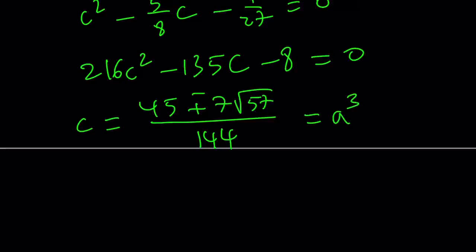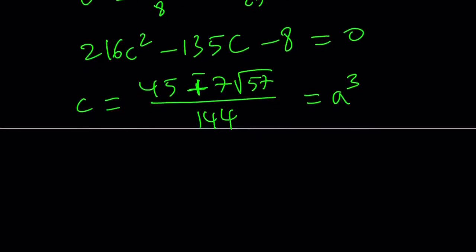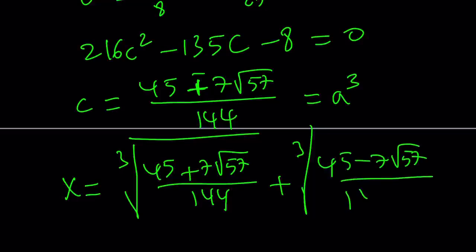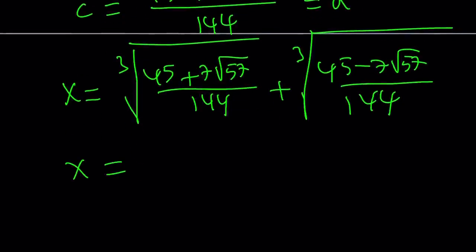Take one of the solutions. Doesn't matter which one because a plus b is commutative. From here, a becomes the cube root. So a becomes one of the cube roots, and b becomes the other cube root. So to keep a long story short, x becomes the cube root of 45 plus 7 times the square root of 57 over 144, plus the cube root of 45 minus 7 times the square root of 57 over 144. It's fun, isn't it? And guess what? If you simplify this expression, you get x equals 1 half.